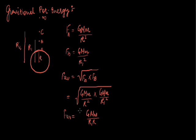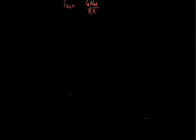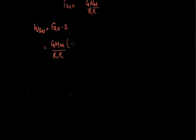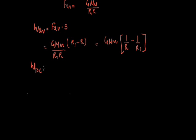Now let us talk about the work done. Work done by a force is equal to the dot product of force and displacement. So I can write the average work done as F_average dot displacement s. We have already calculated the average gravitational force to be GMm/(r₁r), and the body is displaced from r to r₁, so the effective displacement will be r₁ minus r.